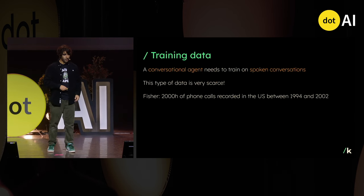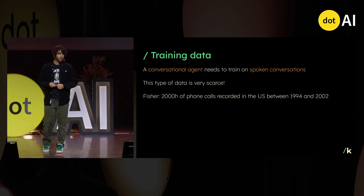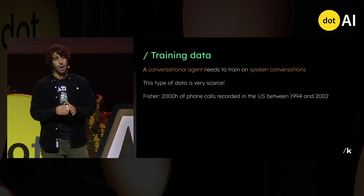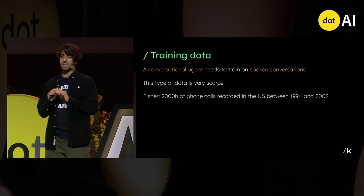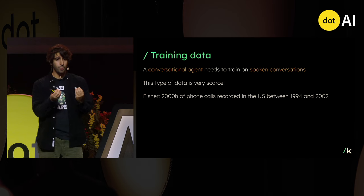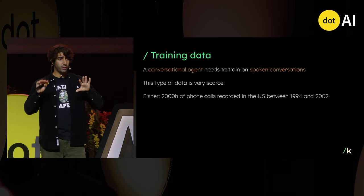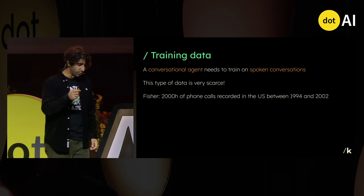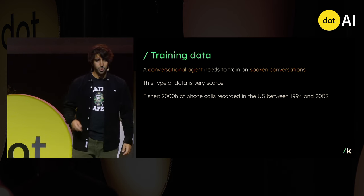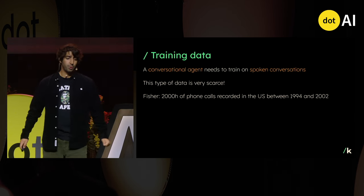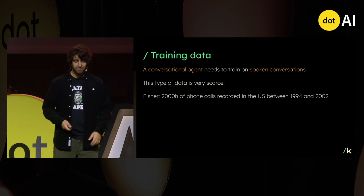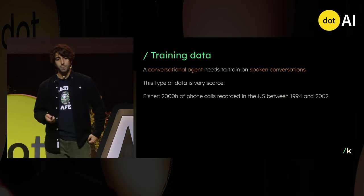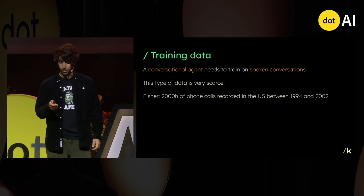Now that we have an algorithm, we need training data. To train a conversational agent, we need spoken conversations. One big difficulty is that this kind of data is very scarce. To teach the model its role in conversation, we need stereo data where one channel is the user and one channel is the system. An academic dataset that allows making prototypes is called Fisher — it's 2,000 hours of phone calls recorded in the U.S. between 1994 and 2002.